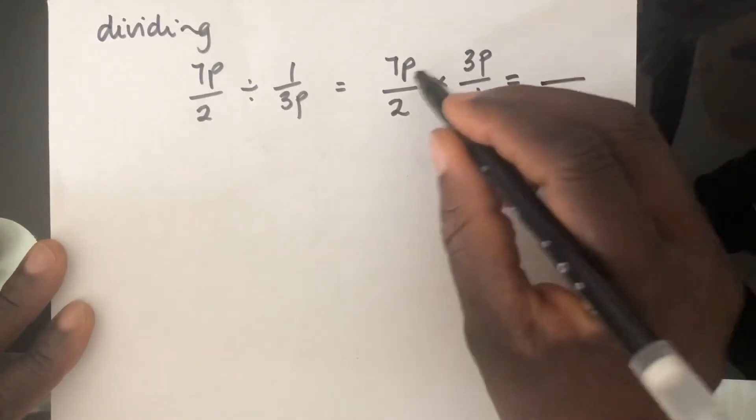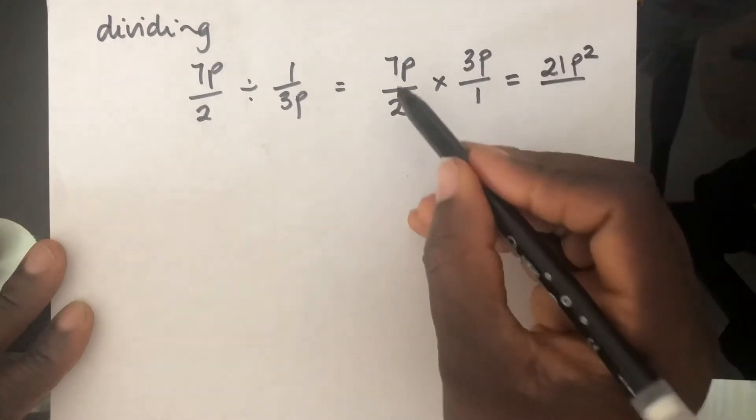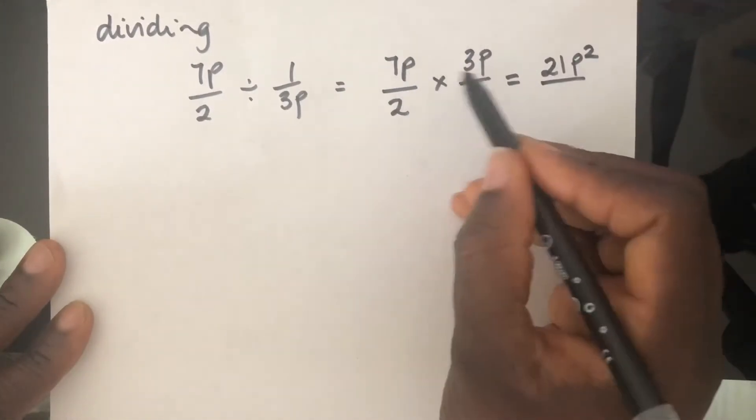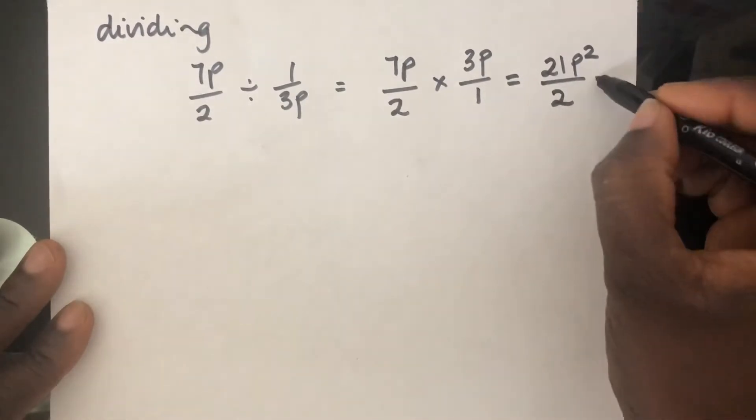I don't think anything can cancel down there. We just have to do that multiplication. This is going to give me 21P squared because 7 times 3 is 21 and P times P is P squared all over 2. That's the answer.